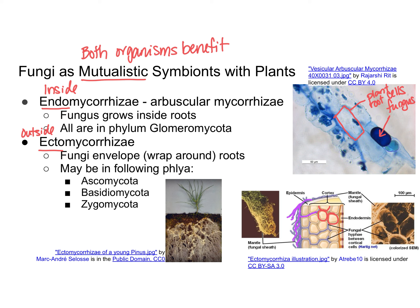You can also see the ectomycorrhizae at a macroscopic level. The yellowish, stringy structures surrounding the root of the plant are the fungi. In another picture, the thicker, yellower structures are the root of the plant, and all the fluffy material surrounding the roots is the ectomycorrhizae fungi.